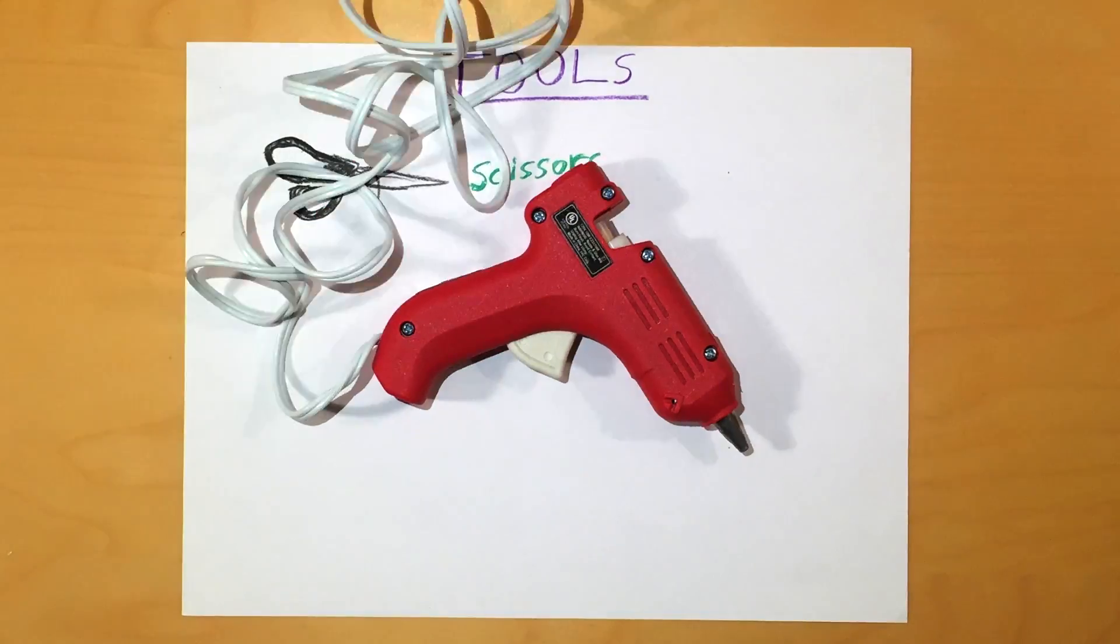Next, we should talk about the tools you'll need to build the robot. First, grab some scissors. Next, get a glue gun.